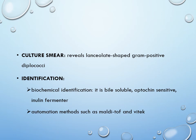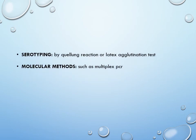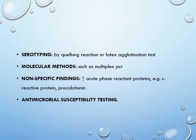Automated methods such as Vitek and Pheonix are also available. Serotyping is very important and can be done by the Quellung reaction or latex agglutination test, and molecular methods are available. Non-specific findings include raised CRP and procalcitonin, and finally you will do AST — antimicrobial susceptibility testing.